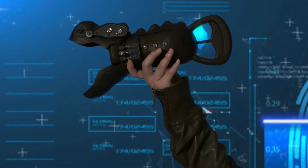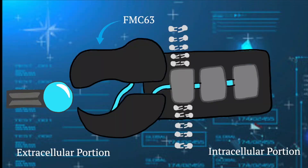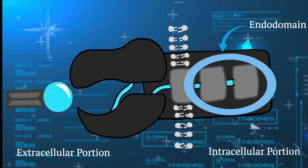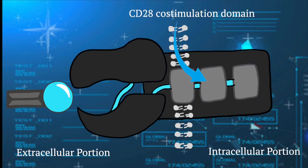Here's how to use your CAR. Attach the FMC63 single-chain fragment variable, or the binder, to CD19. The binder is attached to the CD28 transmembrane domain, which is attached to the endodomain. The endodomain consists of CD28 co-stimulation domain and CD3Z.